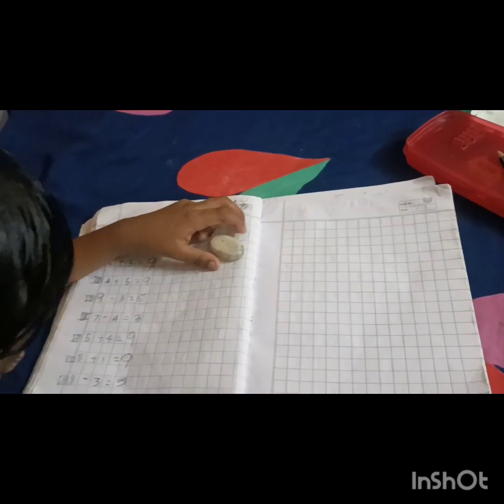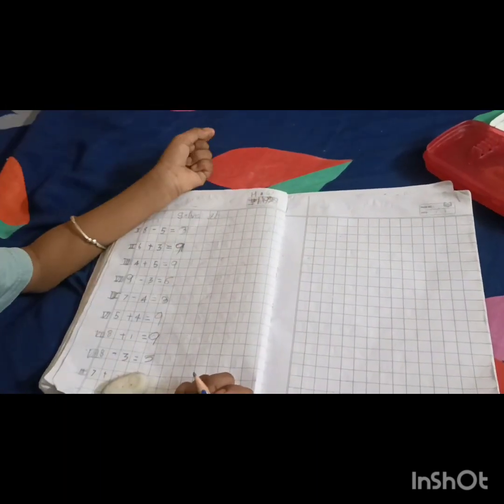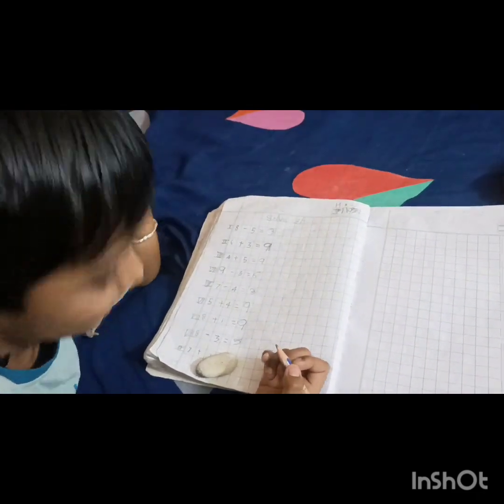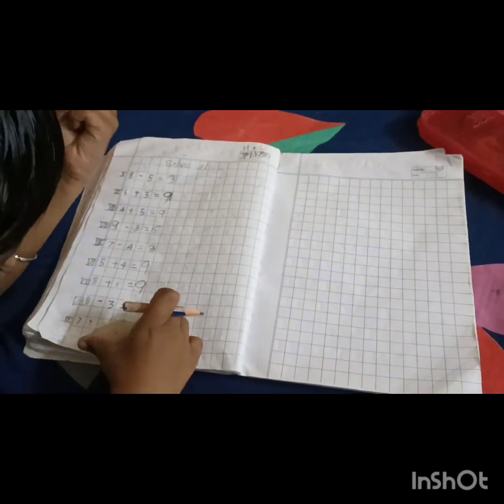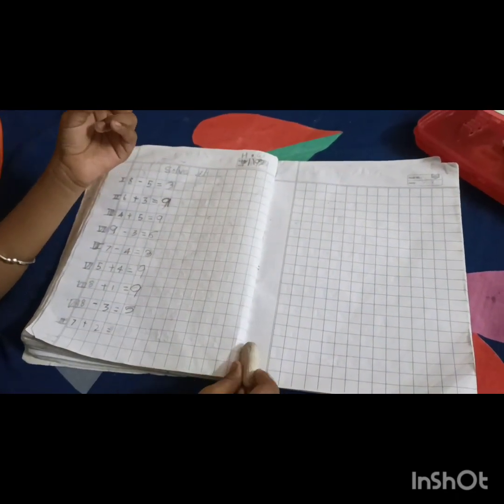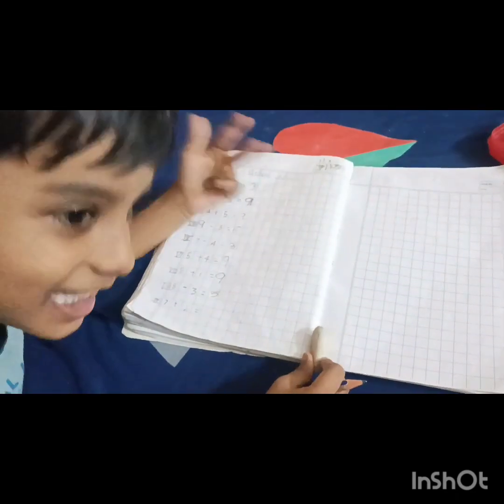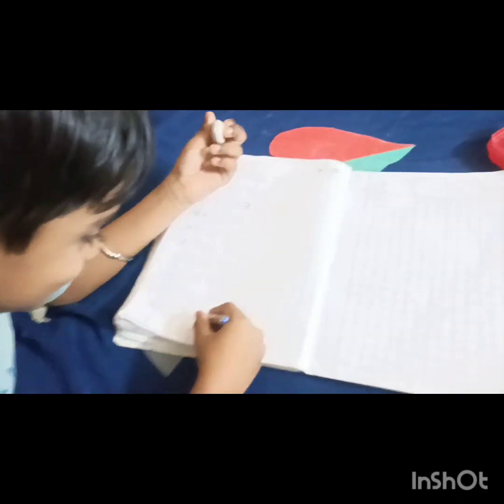7 plus 2. 7 plus 2. 7 in the mind. 2 in the mind. How do you think? 8, 9. That's it.